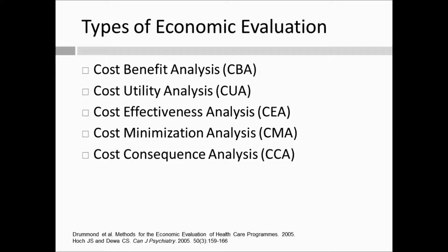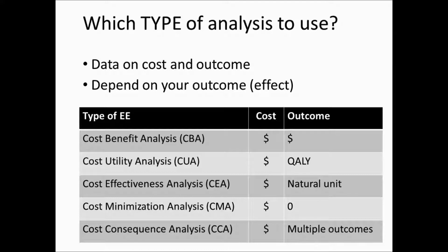I also want to mention opportunity cost — our goal is always to use resources for their best use. When you spend a dollar on something, it means you cannot spend it on something else. Opportunity cost focuses on what you have given up. When you have a new program, you're spending time to implement it — that's time you cannot spend doing something else. Now, back to our question: we have two programs, and we want to know if the new program is cost-effective. All types differ in the middle part — the outcome.